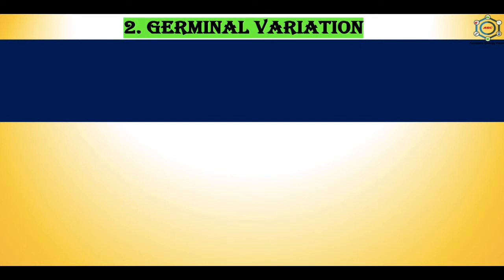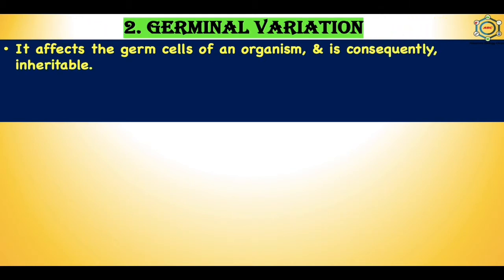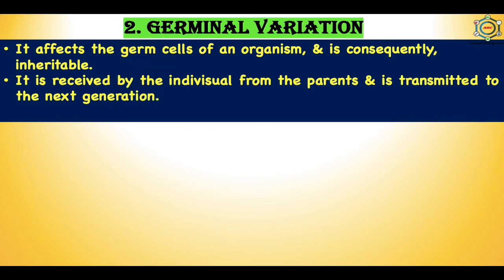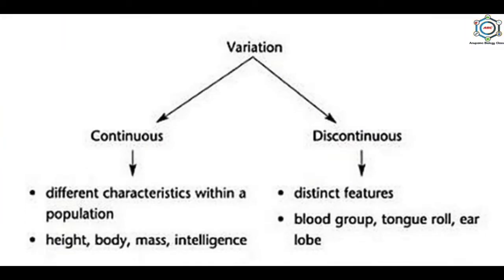The second type is germinal variation. Germinal variation affects the germ cells of an organism and is consequently inheritable. It is received by individuals from parents and is transmitted to the next generation. Germinal variation is divided into two types: continuous variation and discontinuous variation. Continuous variation involves different characteristics within a population like height, body mass, and intelligence, while discontinuous variation involves distinct features like blood group, tongue rolling, and ear lobe type.